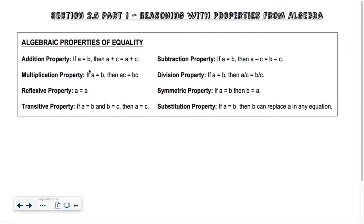Section 2.5 Part 1 is on reasoning with properties from algebra. So we're going to use things that you already know today. The next time I see you, we're going to do some harder proofs that involve some geometry reasoning.